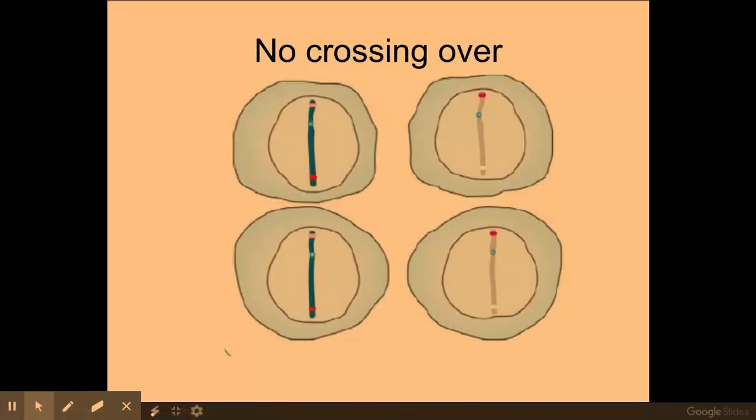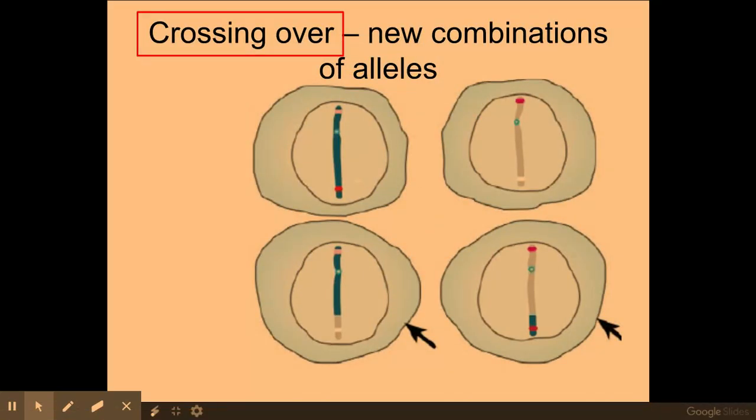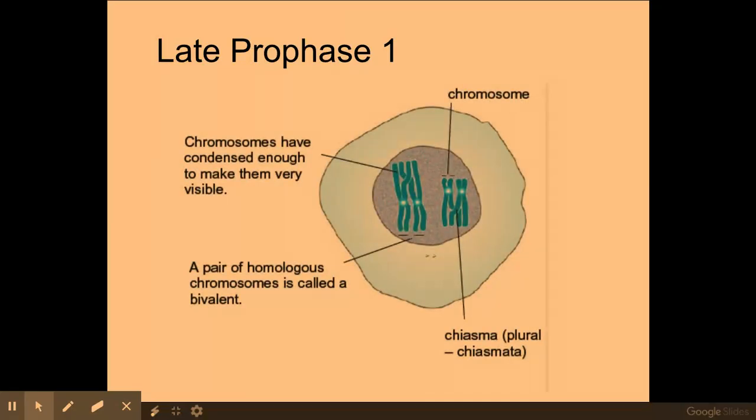So as you can see here, this is where there's no crossing over going on, but here you can see at the bottom crossing over has caused genetic variation. So crossing over is very important at helping to create genetic variation within my gametes. Within late prophase one, that's where the crossing over occurs between my bivalents.